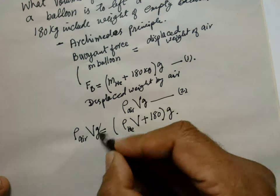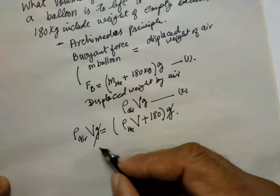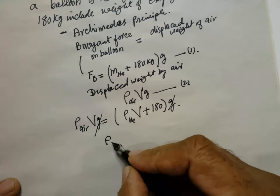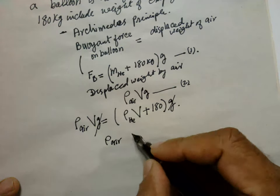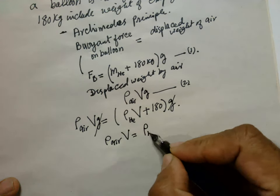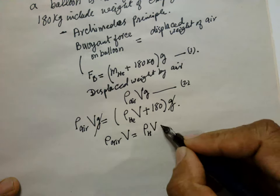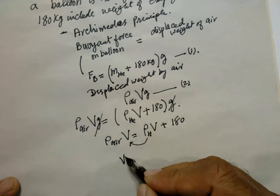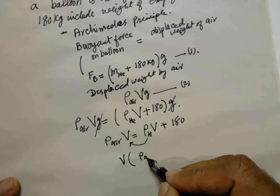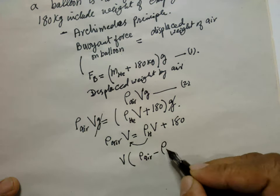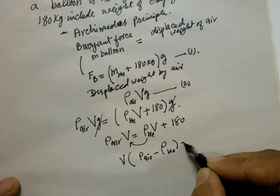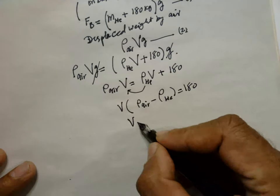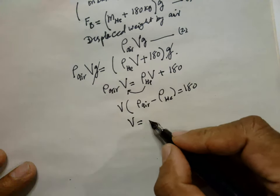The g cancels, so rho air into V is equal to rho helium into V plus 180. Taking V common: V times (rho air minus rho helium) is equal to 180. So volume of the helium is 180 divided by (rho air minus rho helium).